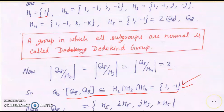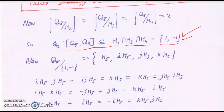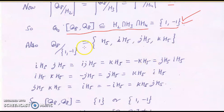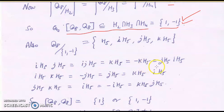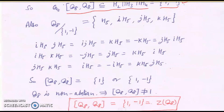Since Q8 is non-abelian, [Q8,Q8] cannot be trivial. Therefore, the commutator subgroup of Q8 is {1,-1}. To verify, the quotient Q8/{1,-1} gives cosets H5, iH5, jH5, kH5. You can check that iH5·jH5 = kH5 = jH5·iH5, confirming this quotient is abelian. So the commutator subgroup of Q8 equals the center of Q8, which is {1,-1}. Thank you.